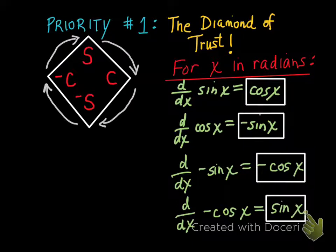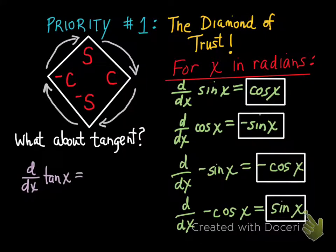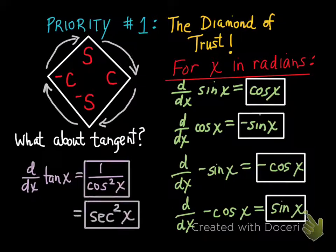Know it, learn it, love it, live it. But you're asking: what about tangent? The Diamond of Trust isn't utilized at all with tangent. A lot of calculus students are great with the diamond, but as soon as they're given tangent they're not sure what to do. This separates great calc students from good ones. The derivative of the tangent function can be written two ways: 1 over cosine squared X, or secant squared X — they are equivalent.